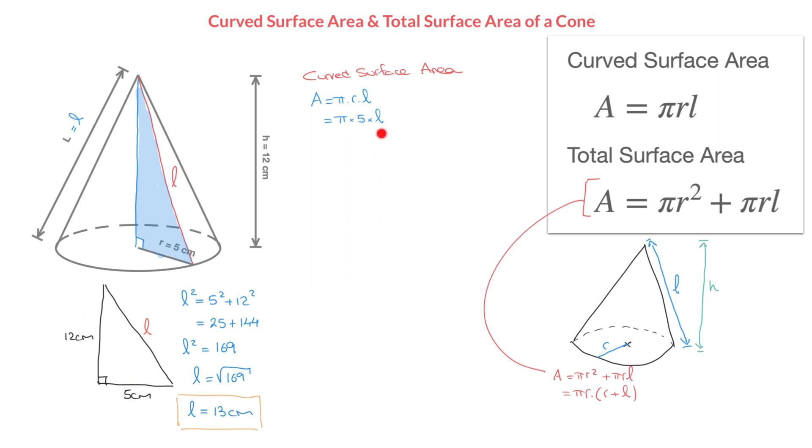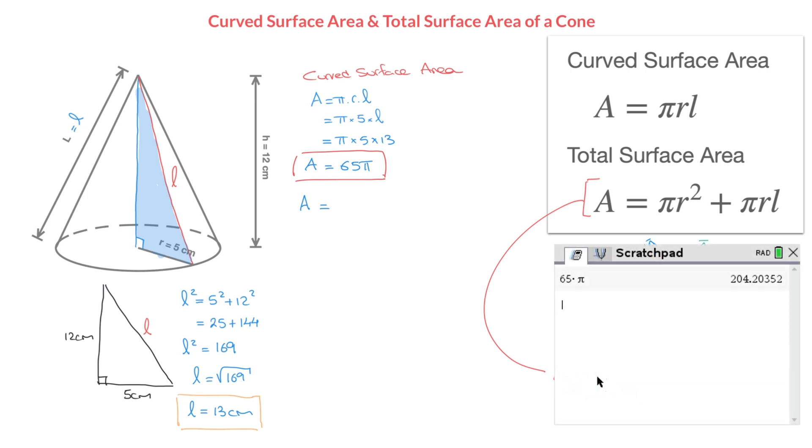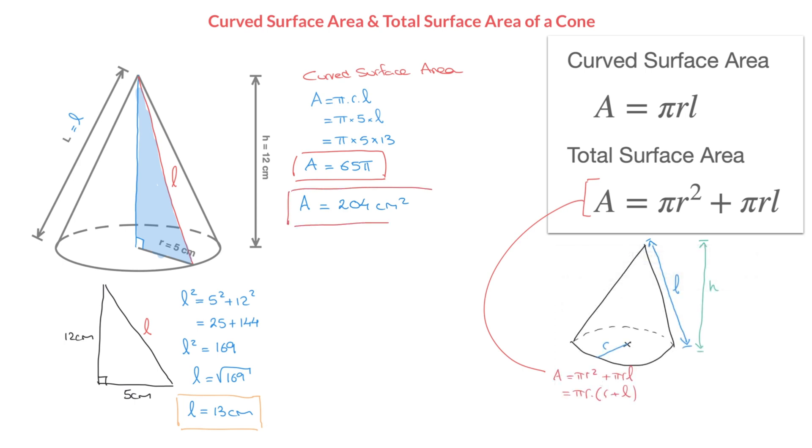And we now have this cone's slant height. Using this value, we can go back to our formula for the curved surface area, and we can state that this area is equal to pi times 5 times 13. Now if ever we weren't allowed to use a calculator in a test, then I'd suggest writing this final answer as a multiple of pi. In other words, I'd say that 5 times 13 is 65, and so I'd state that the curved surface area is equal to 65 pi, and that would be 65 pi square centimeters. But assuming that we have access to a calculator, then all I'd have to do to find this curved surface area is plug 65 times pi into my calculator, and in doing so and rounding to three significant figures, I find that this area is equal to 204 square centimeters. And we're done. We've just found this cone's curved surface area.